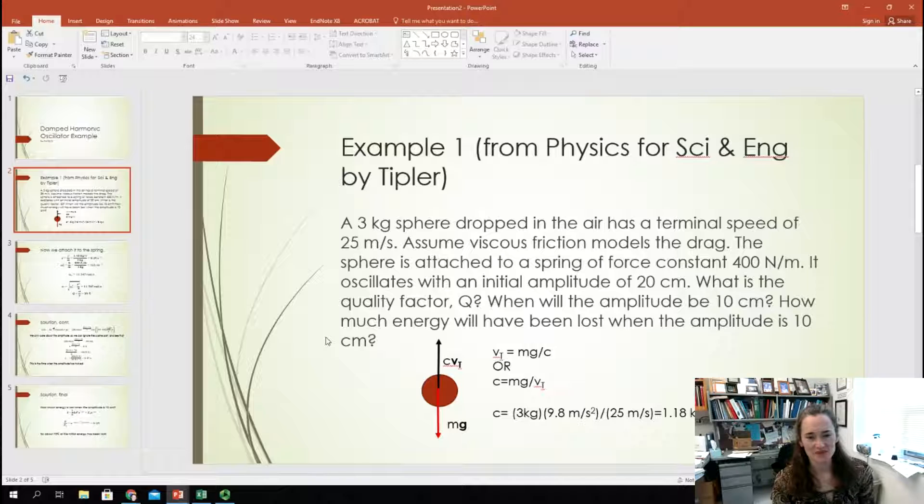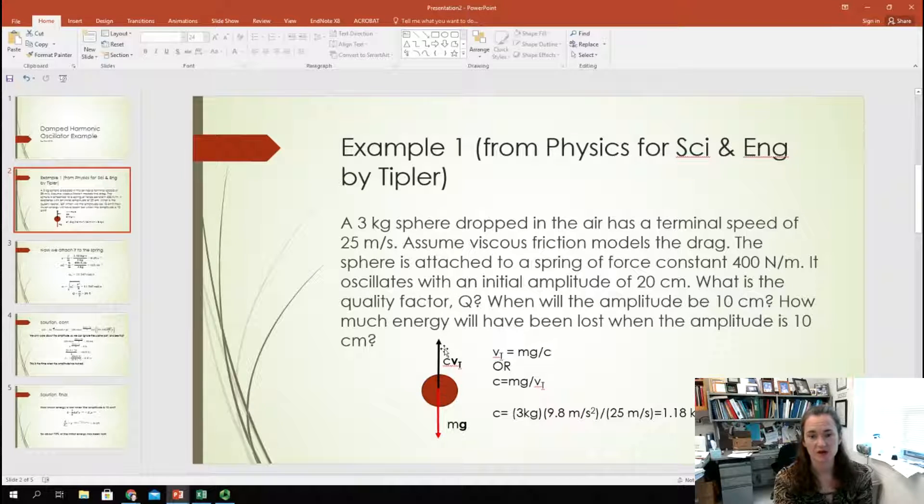So, here, I'm just modeling it not attached to a spring or anything. I'm just doing the free body diagram for this sphere being dropped under the influence of gravity and then achieving its terminal velocity. Now, once it's achieved terminal velocity, of course, the downward force of gravity is balanced by the upward force of the air resistance. So, at that point, then the magnitude of those two vectors, mg down and cv_terminal up, are equal.